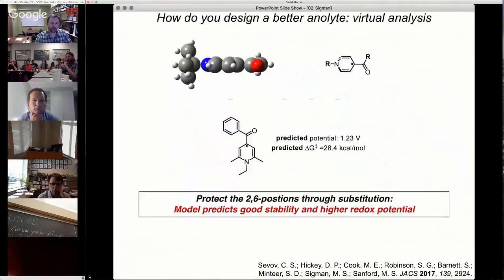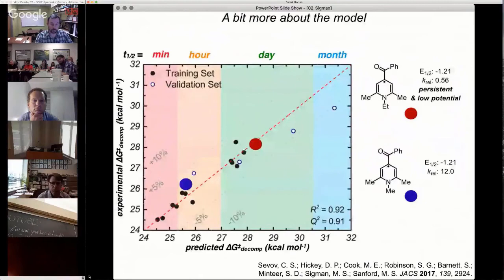Through the virtual screen, what we predicted was this molecule here. You make the molecule more electron rich, and that will increase the voltage, 1.23 volts. It's a significant extrapolation there. We predict this is going to be stable, not quite as stable as the one I showed you, but pretty stable. We make this molecule, and you'll see that we predict the outcome perfectly.